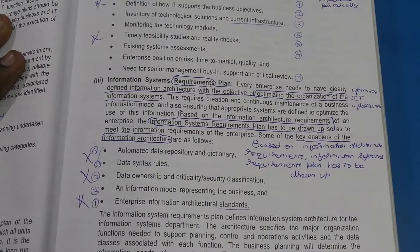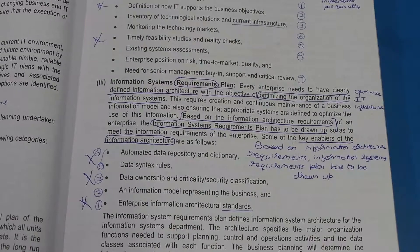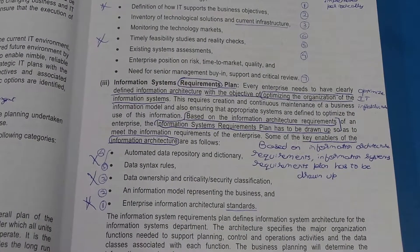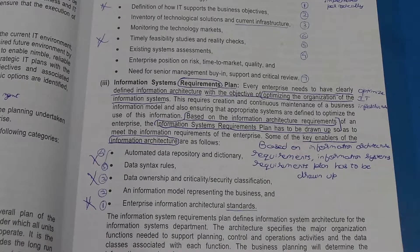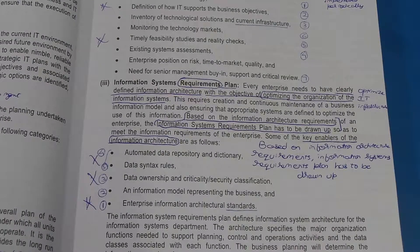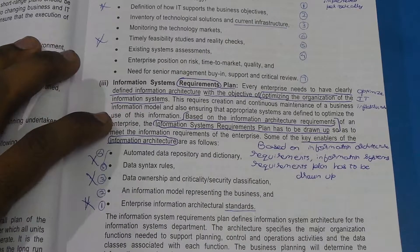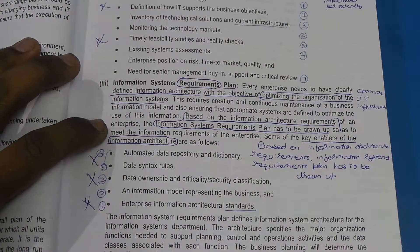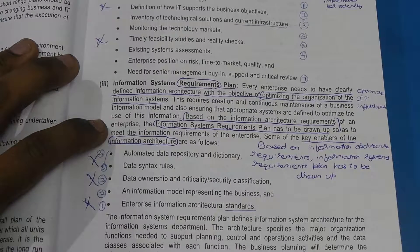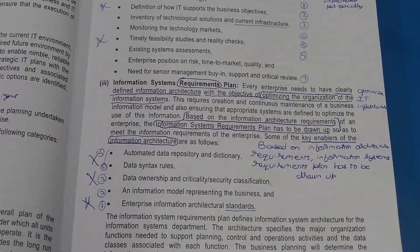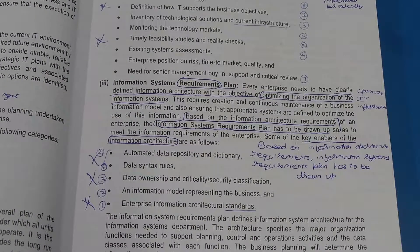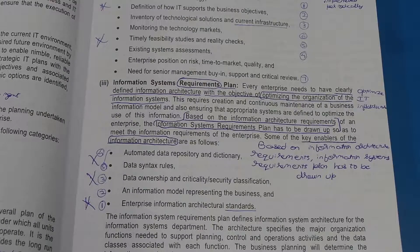Below that in the hierarchy comes the Information Systems Requirements Plan. Once it is decided how the IT assets are going to support the enterprise, the technical specifications and requirements will have to be chalked out — that is what is developed here. Based on the Information Systems Architecture Requirements, the Information Systems Requirements Plan will be developed, deciding what level of technology is required to be used.